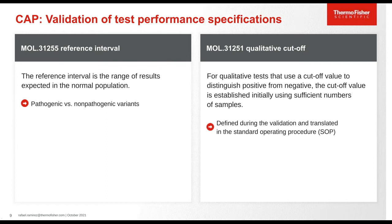Reference interval refers to the range of results expected in the normal human population. For the qualitative cutoff — for qualitative tests that use a cutoff value to distinguish a positive from a negative sample — the cutoff value is established initially using sufficient numbers of samples. It is defined during the validation and then translated into your standard operating procedures.